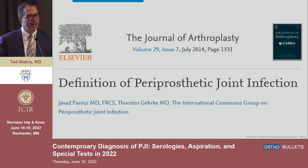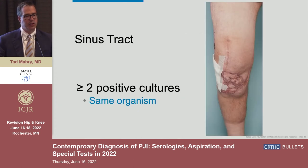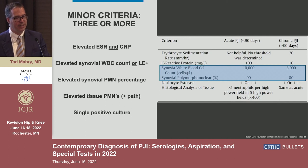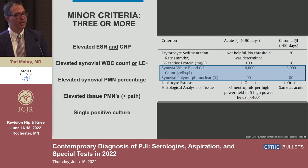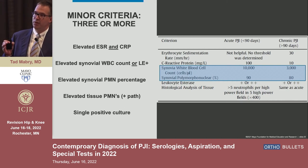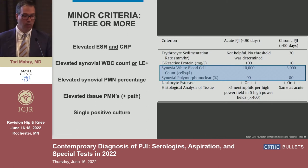Putting it together: the 2013 PJI definition states you have a PJI if you have a sinus tract or two or more positive cultures of the same organism. The minor criteria include elevated SED rate and CRP, elevated synovial white count, or positive leukocyte esterase. The cutoffs of 10,000 and 3,000 are imperfect, as are the percentages. Alpha-defensin helps in patients in that borderline region of white count or percentage — a positive alpha-defensin in that scenario may be important to recognize.